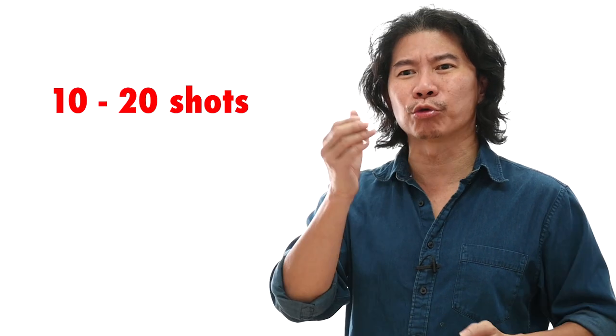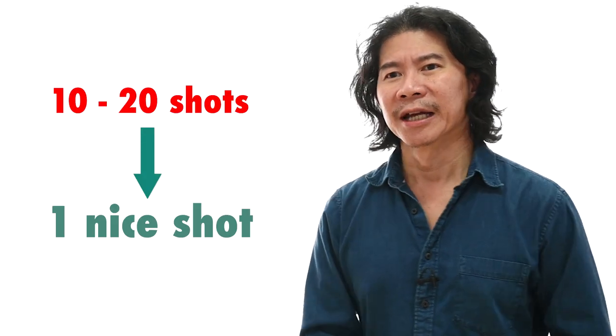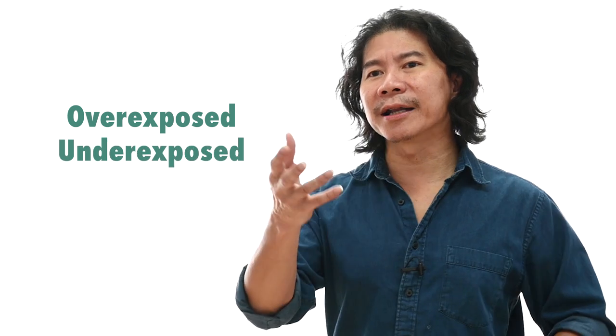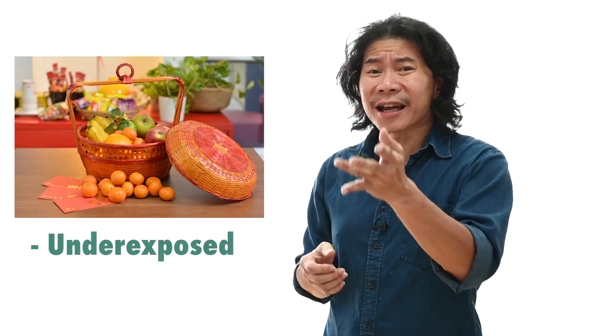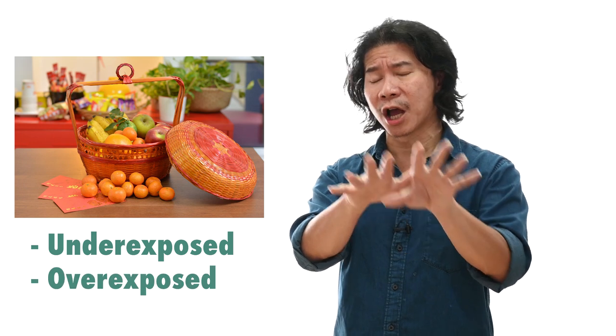That means they're taking like 10 to 20 shots to get one nice shot. They can be taking shots that are over, under, very over, very under, almost okay, not quite right. Take a look at this photo. I could have made mistakes in two areas: underexposed or overexposed. I'm not going to even talk about composition or focusing yet, just exposure.